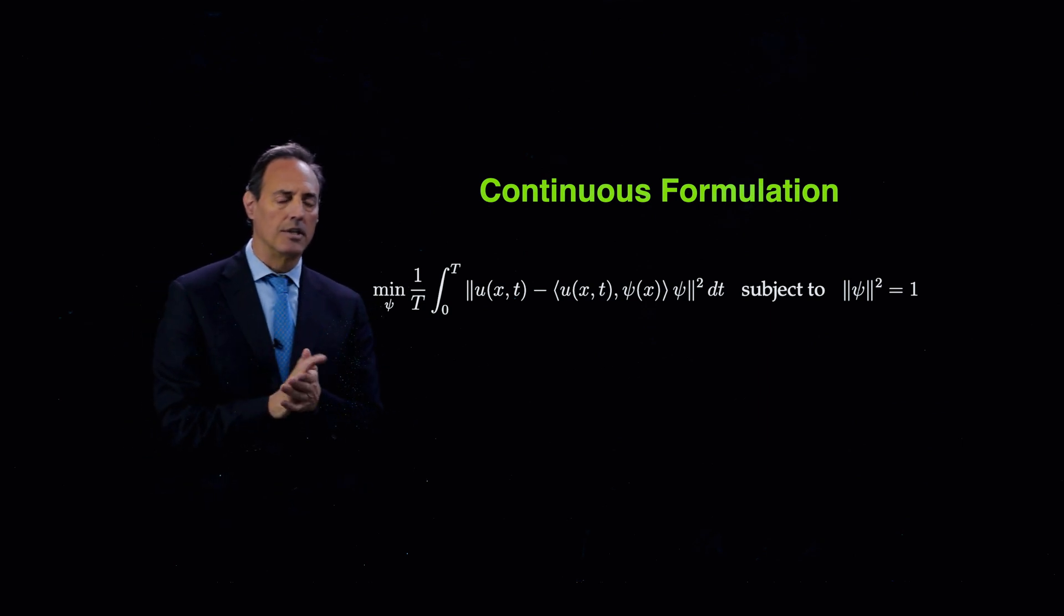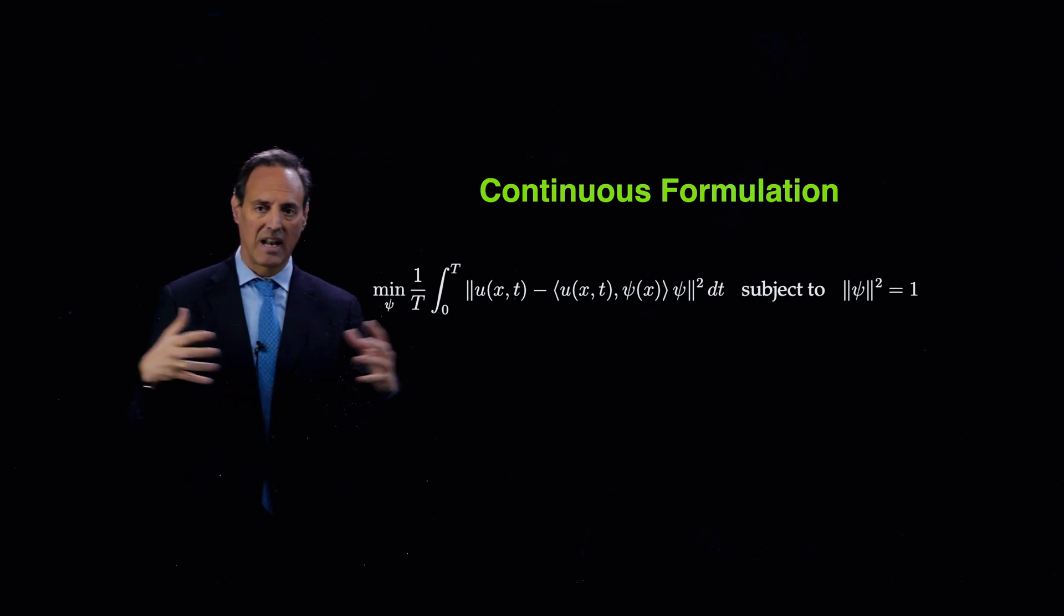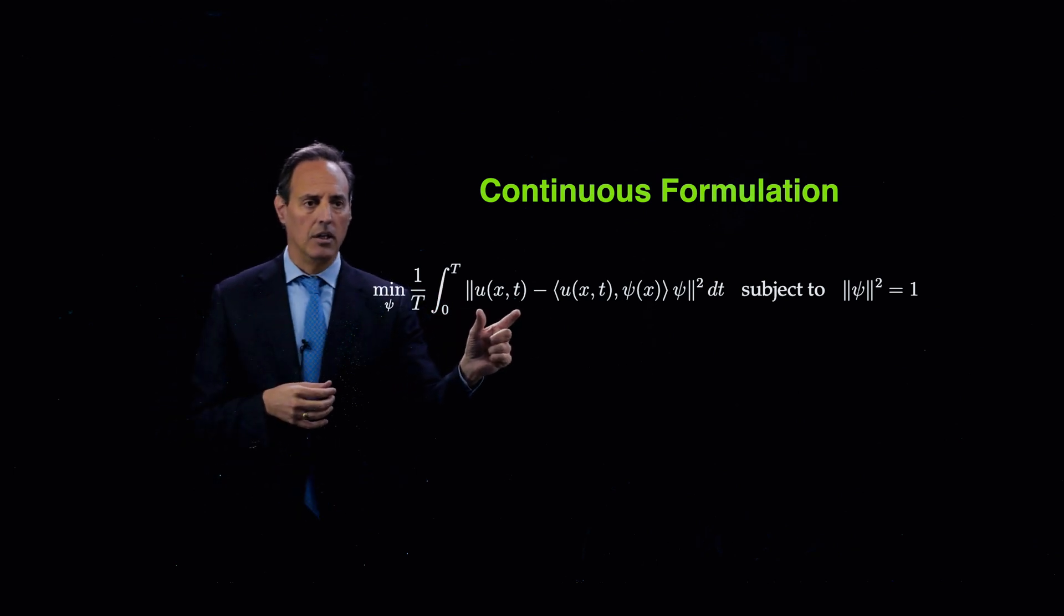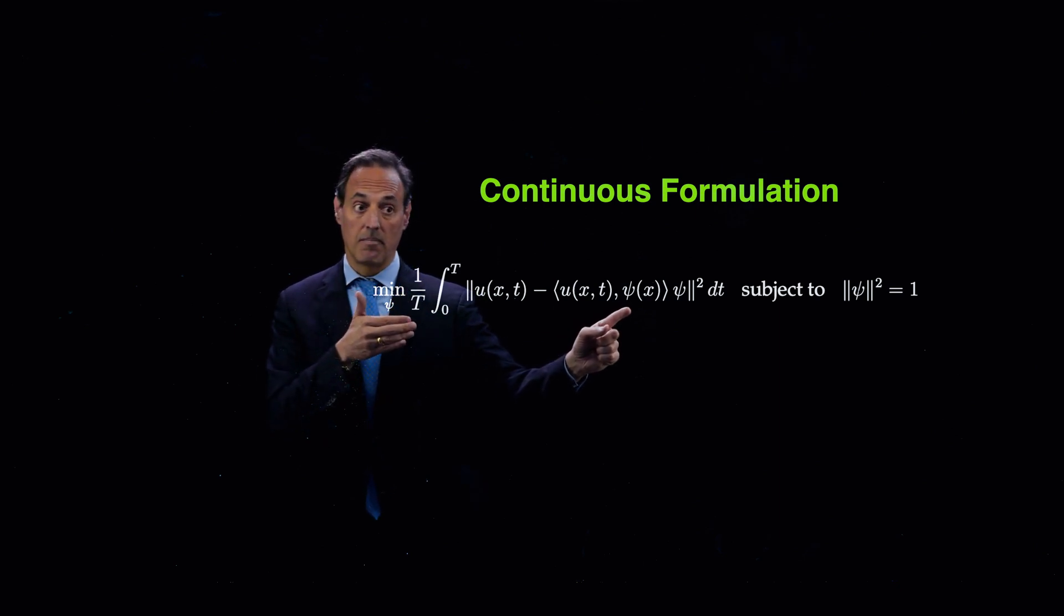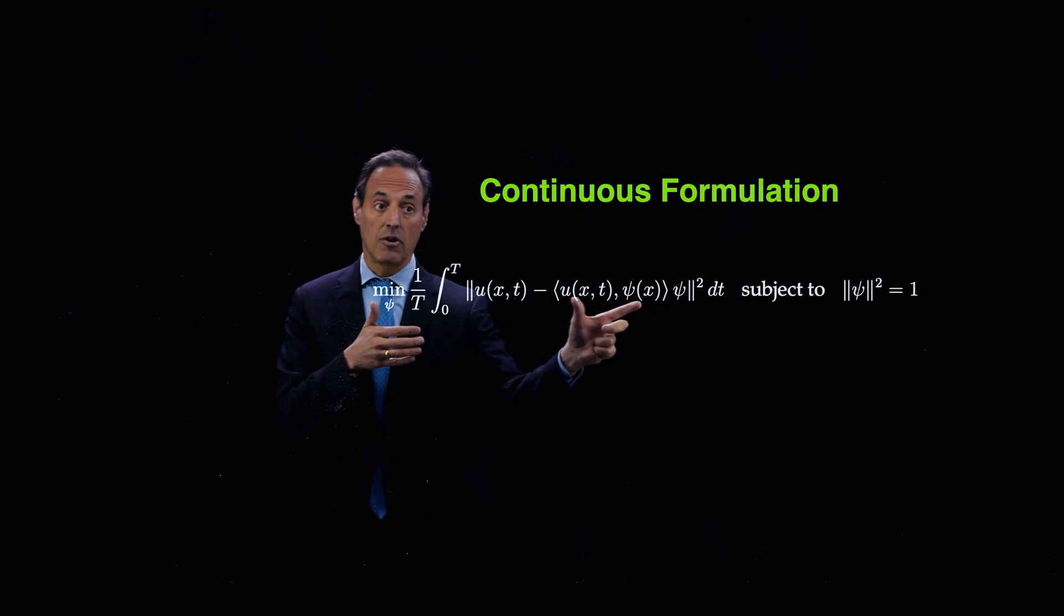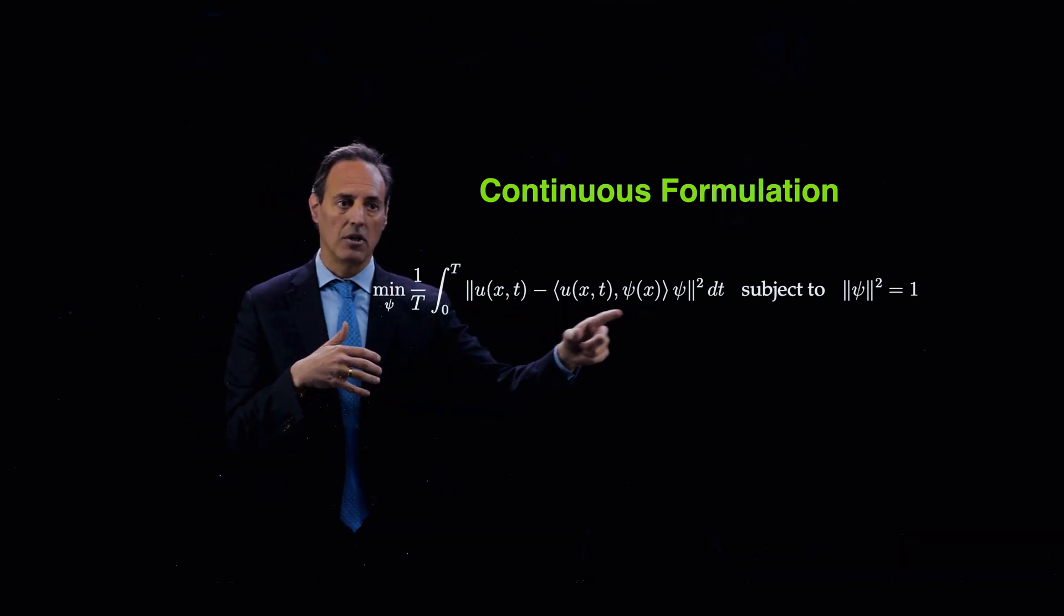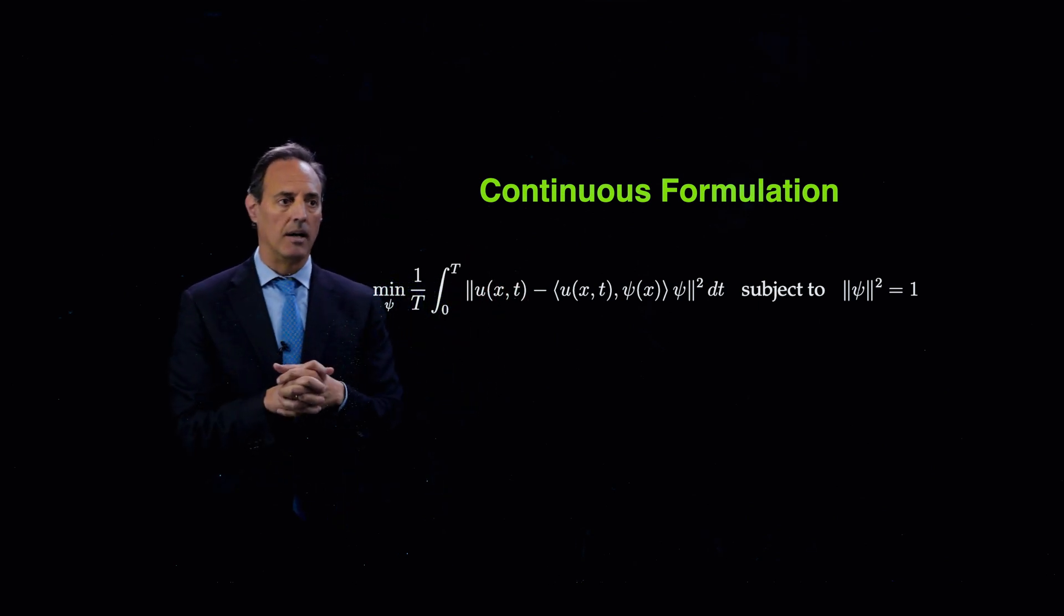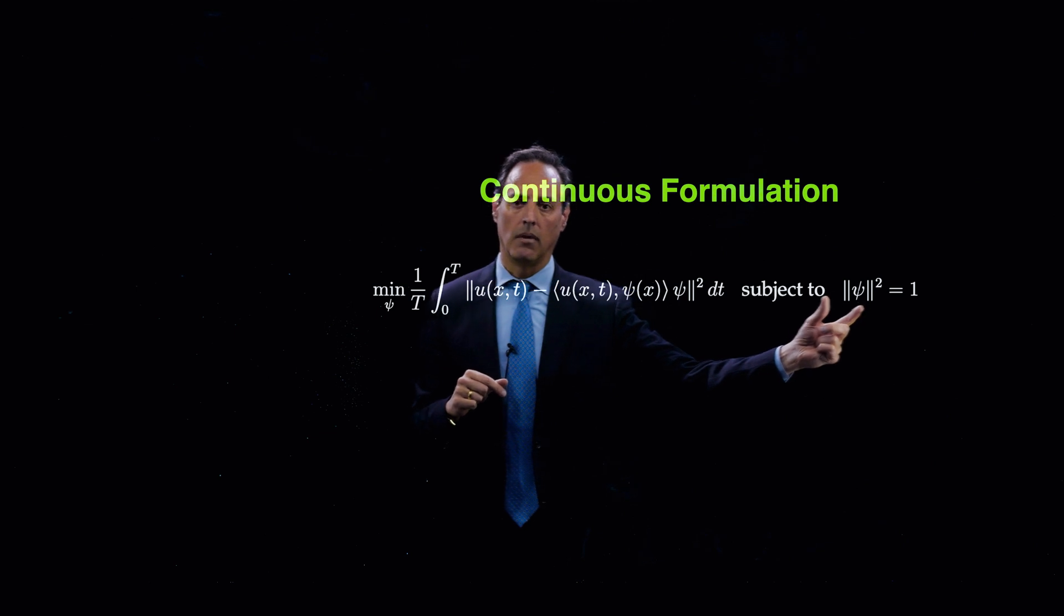What we're going to do now is then formulate the continuous optimization problem that's going to be equivalent to that discrete version. And here it is. I'm going to run this thing from over some time period, 0 to T. So I'm going to have a 1 over T here, so it's going to average over the time. Integrate from time 0 to T, and here's what we're integrating. The norm of u minus u projected onto this some basis phi of x, and then that inner product projected back on phi.